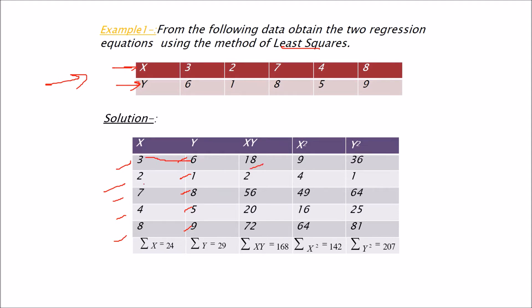Just multiply X with Y. 3 into 6, 18. 2 into 1, 2, and likewise. Then just take square of X. 3 square is 9, 7 square is 49, 8 square is 64. Now take Y square. 6 square, 36. 8 square, 64. Likewise. Now you add all these.